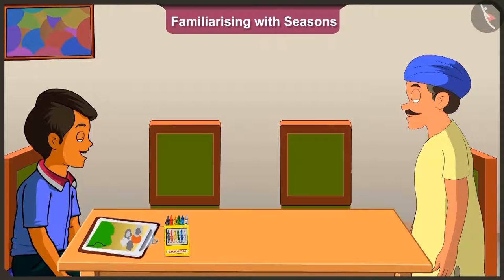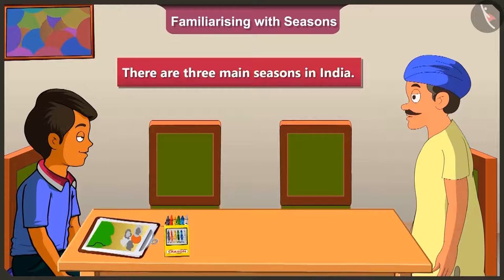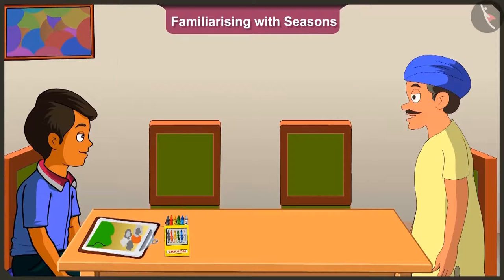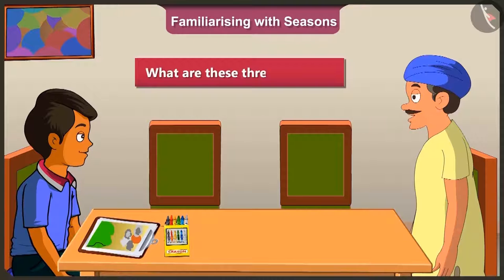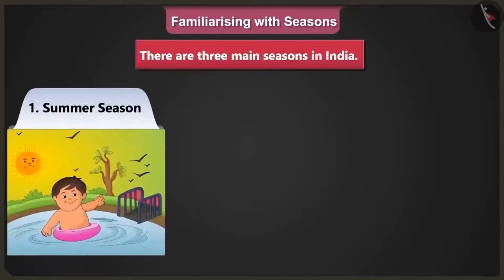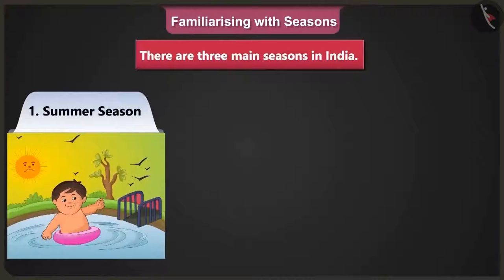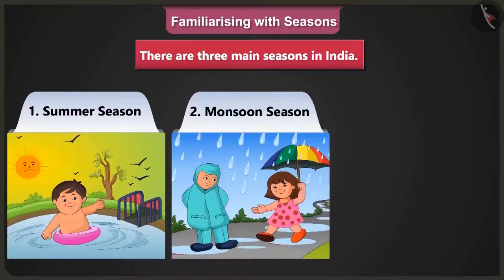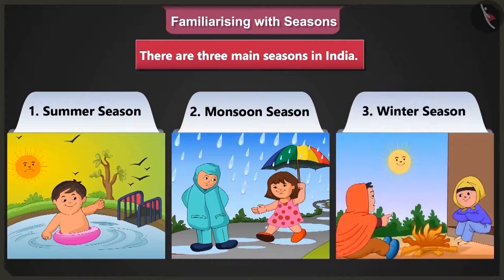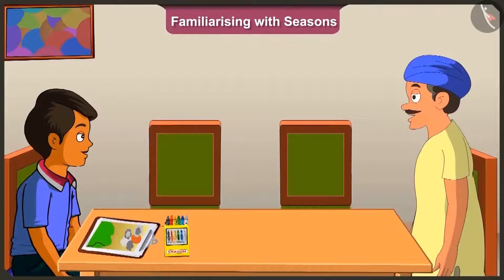Okay, so how many seasons are there in our country? There are three main seasons in India. They always come in the same order in the year. The three seasons are: hot means summer season, rain means monsoon season, and cold means winter season.